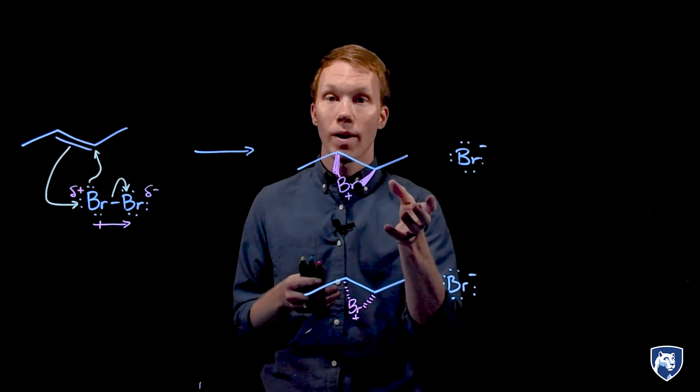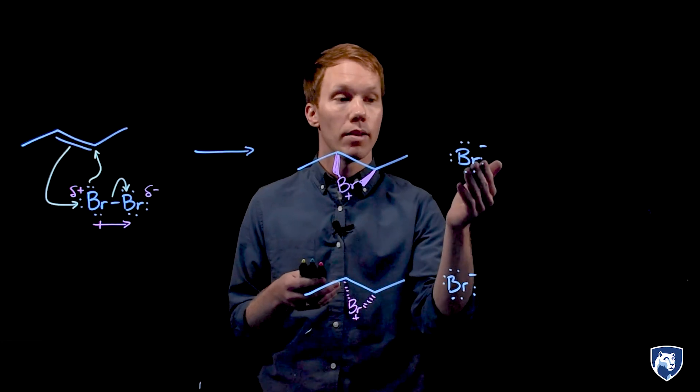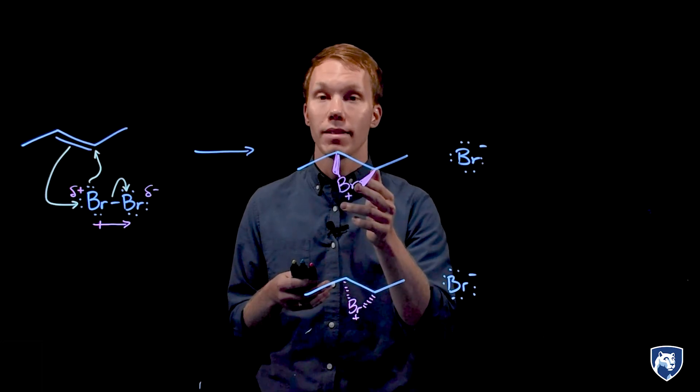Given the species present at this point in our mechanism, where is the electrophilic site? Is it the bromide ion, carbon of the bromonium ion, or the bromonium atom itself?